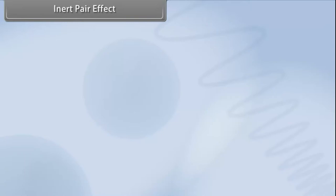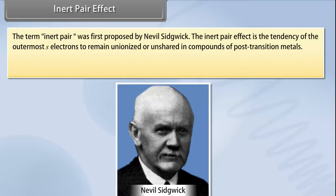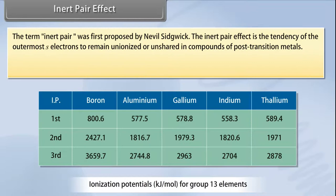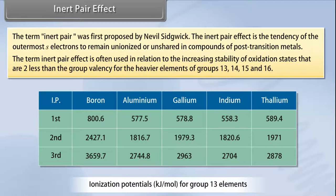Inert pair effect: The term 'inert pair' was first proposed by Nevil Sidgwick. The inert pair effect is the tendency of the outermost s electrons to remain unionized or unshared in compounds of post-transition metals. It is often used in relation to the increasing stability of oxidation states that are two less than the group valency.